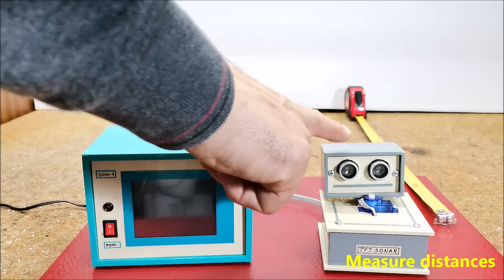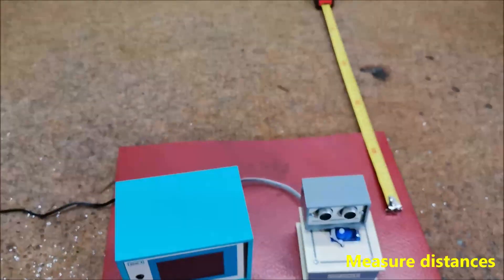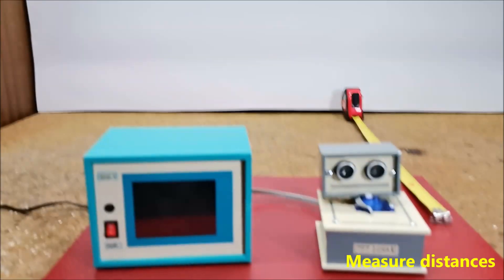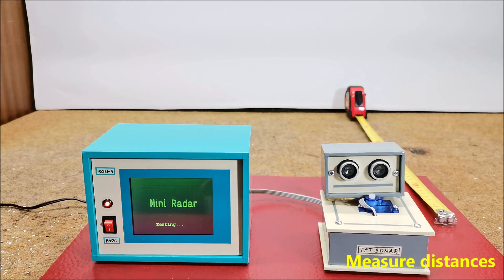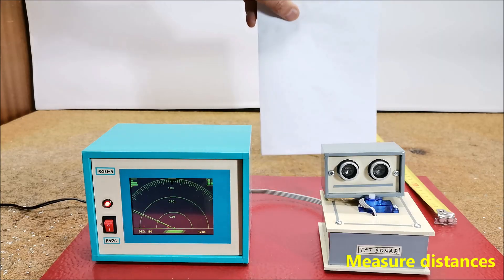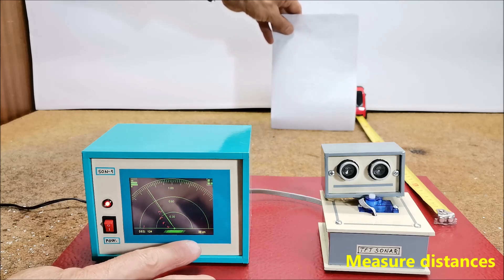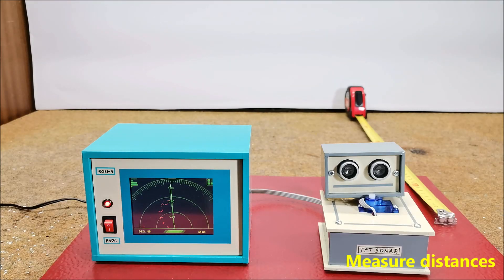At the beginning I separated the ultrasonic sensor from the servo in order to calibrate the graphic presentation with the real distance of the object. 10 cm, 20 cm, 30 cm, 40 cm, and 50 cm. As you can see, the real distance view corresponds to the distance shown on the display.